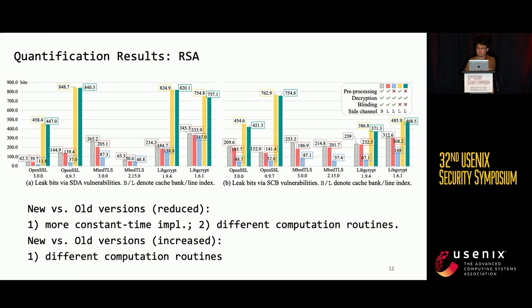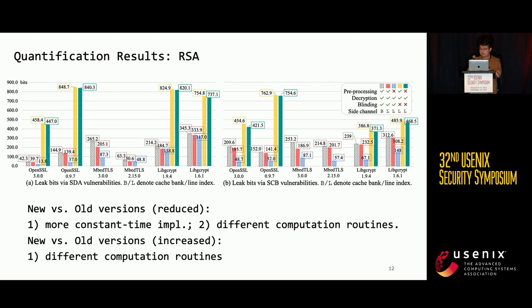To study the differences in leakage among different versions of the same software, we manually checked their implementations. The reduced leaks are mainly due to two reasons: there are more constant-time implementations in newer versions, and the computing routines also change across versions. Some of these changes are for reducing leakage, but some are only for optimization purposes. On the other hand, there are also some regression issues — that is, more leakage is introduced into newer versions, mainly caused by changes in computation routines.